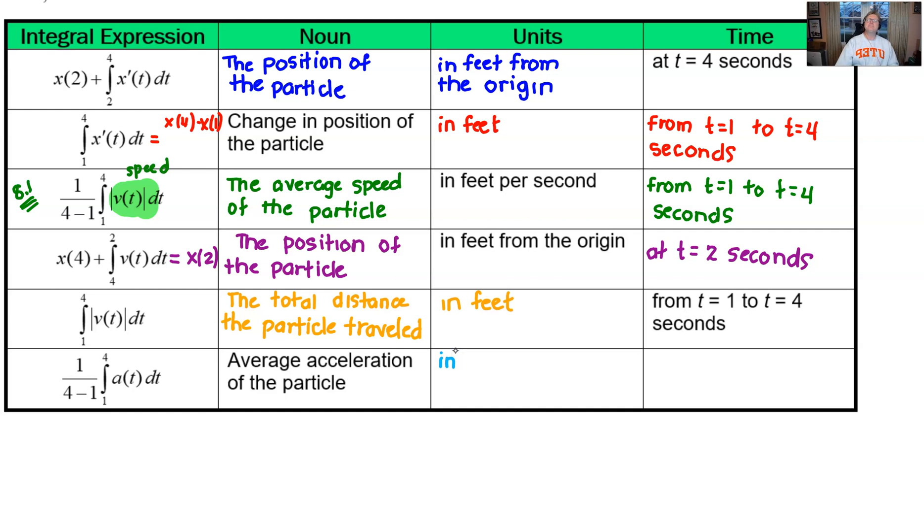That would be length per time per time, length per time squared. So that would be in feet per second squared in this case. And an average acceleration is always going to be on a time interval. Average velocity will be on a time interval as well. So from time t equal 1 to t equal 4 seconds.